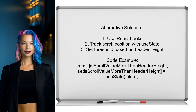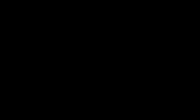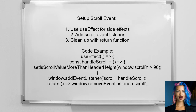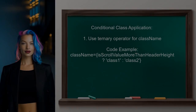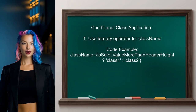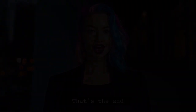An alternative approach involves using React hooks for managing scroll events. This uses the useState hook to track whether the scroll value exceeds the height of the header, and useEffect to handle the scroll event — including adding an event listener and cleaning it up to prevent memory leaks. Finally, a ternary operator is used to conditionally apply classes based on the scroll state.